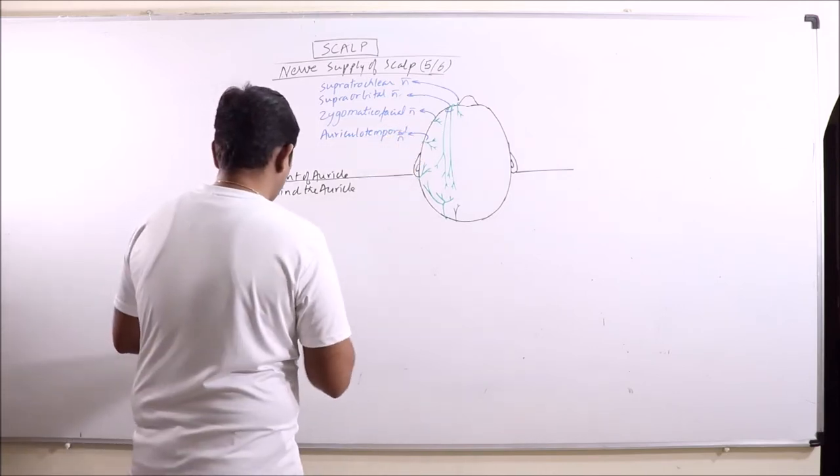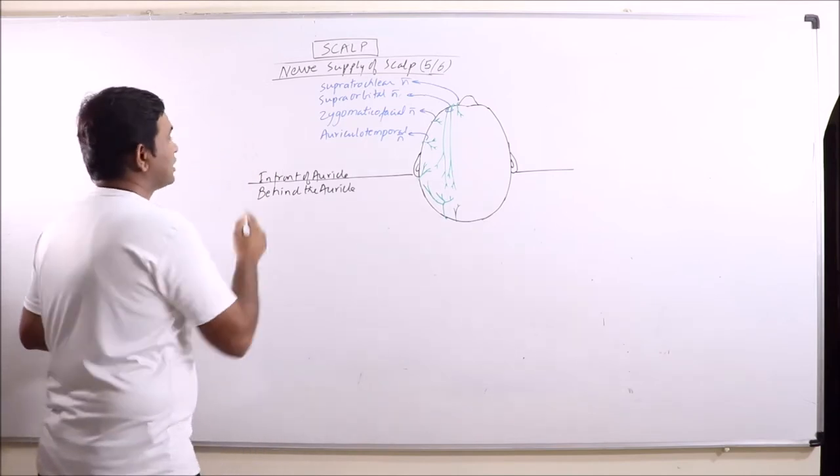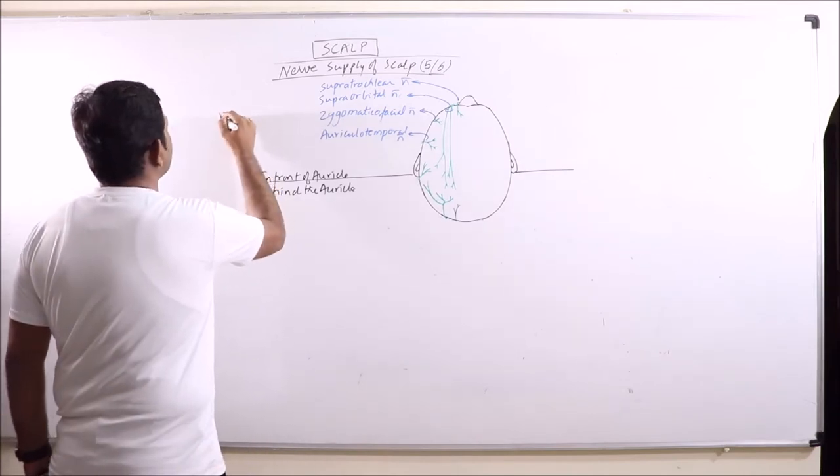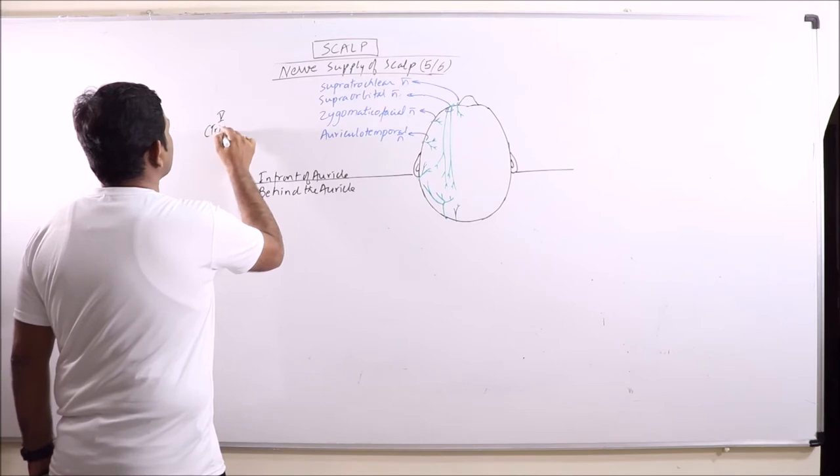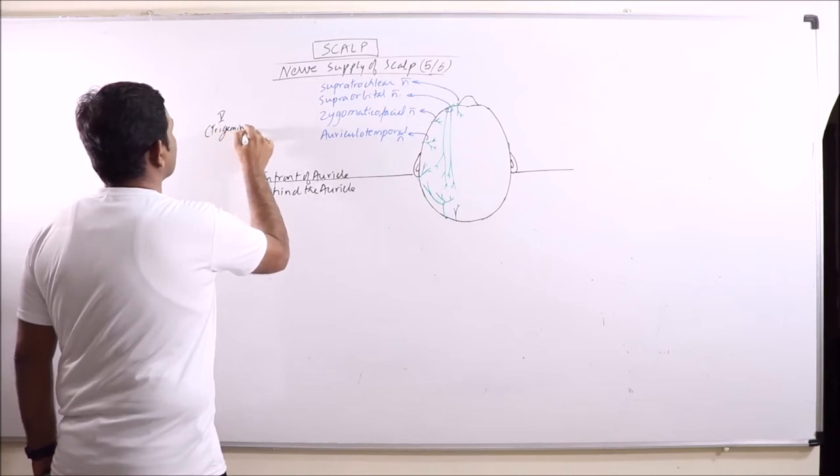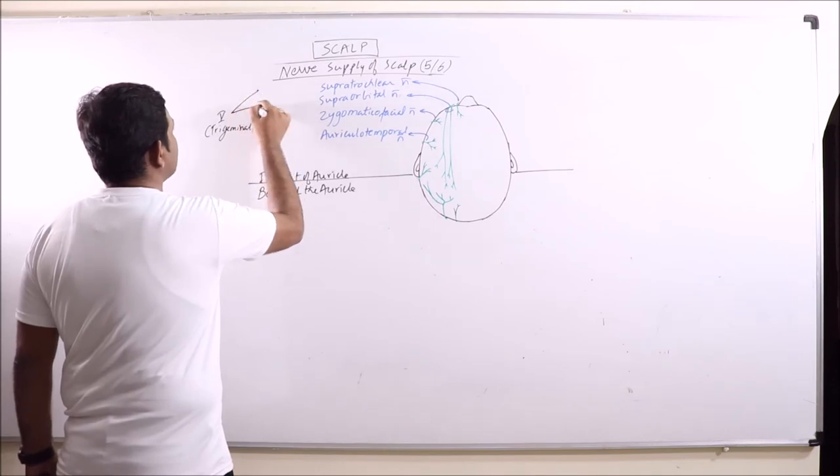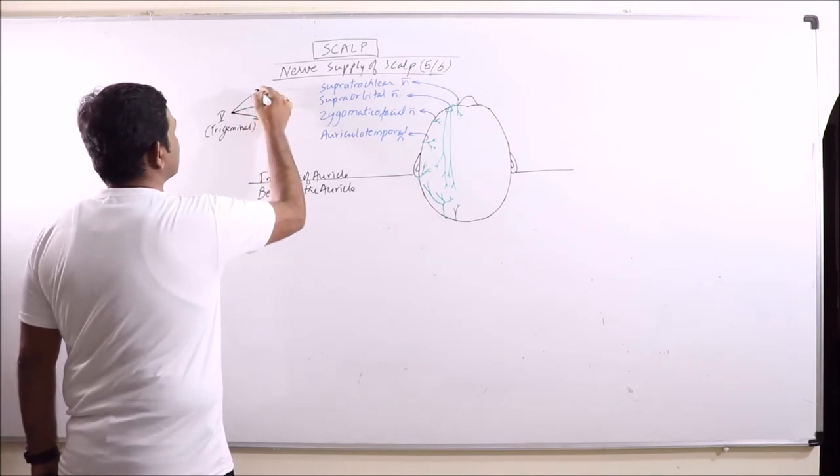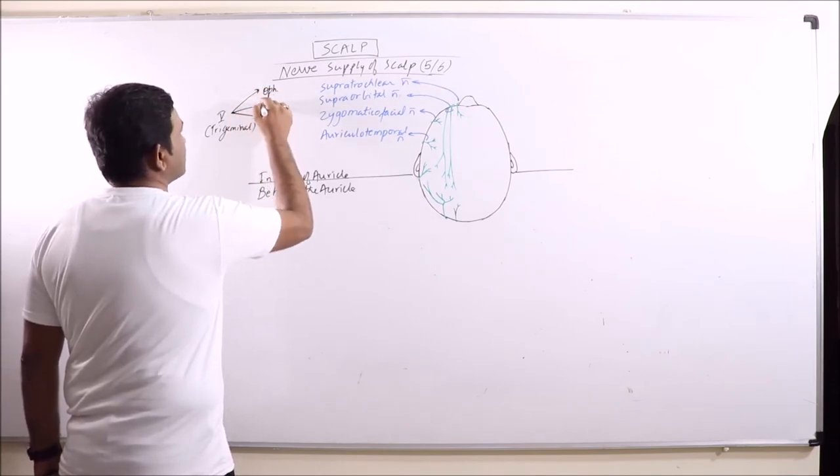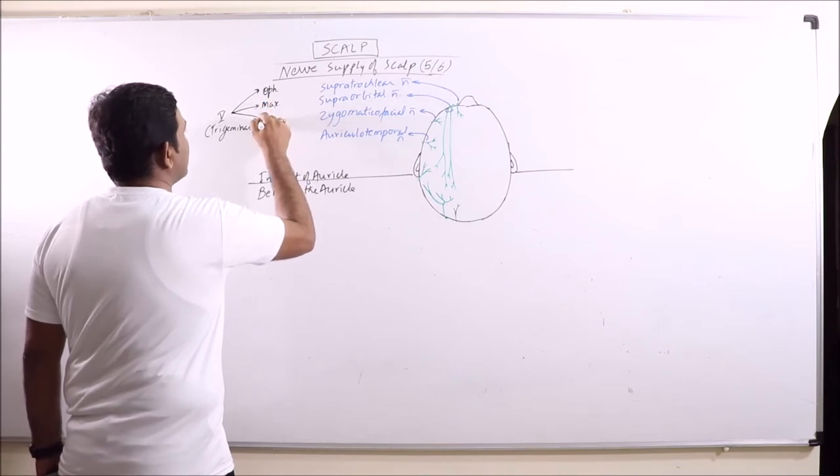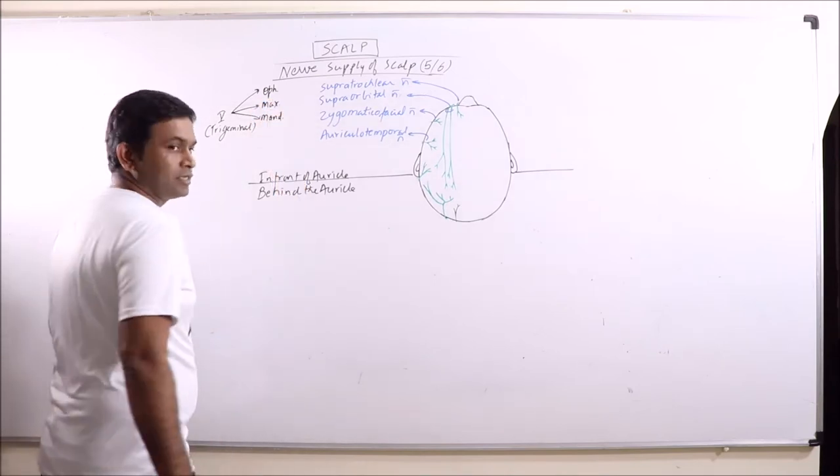Now these all branches are basically from the trigeminal cranial nerve, that is fifth brain nerve. Trigeminal is having three branches, three major divisions: ophthalmic division, maxillary division, and mandibular division.